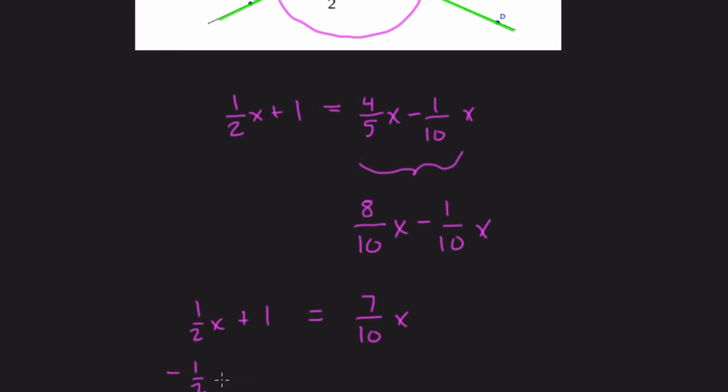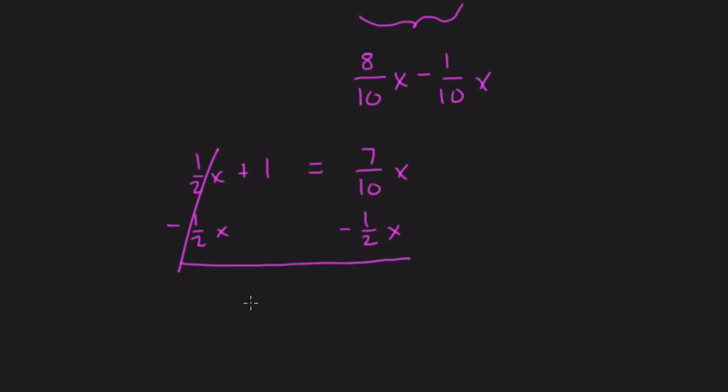Well, I'm going to take 1 half X away from both sides, and my reasoning there is I just want to get this number 1 all by itself. And now what I have is, well, these cancel out, and 1 equals 7 tenths minus 1 half. Now, 1 half, you might recognize, is the same as 5 tenths X. These are equivalent. So taking 7 tenths, we subtract 5 tenths, and we have 2 tenths of X left.